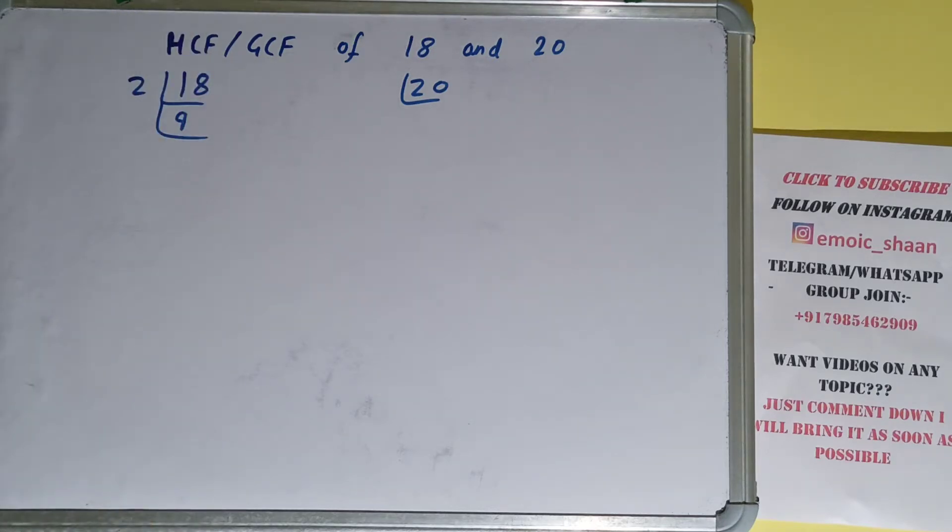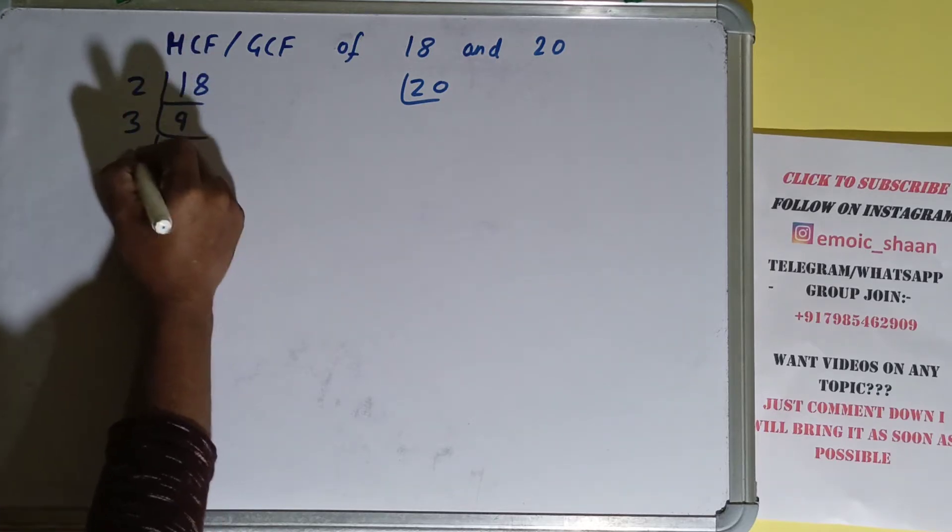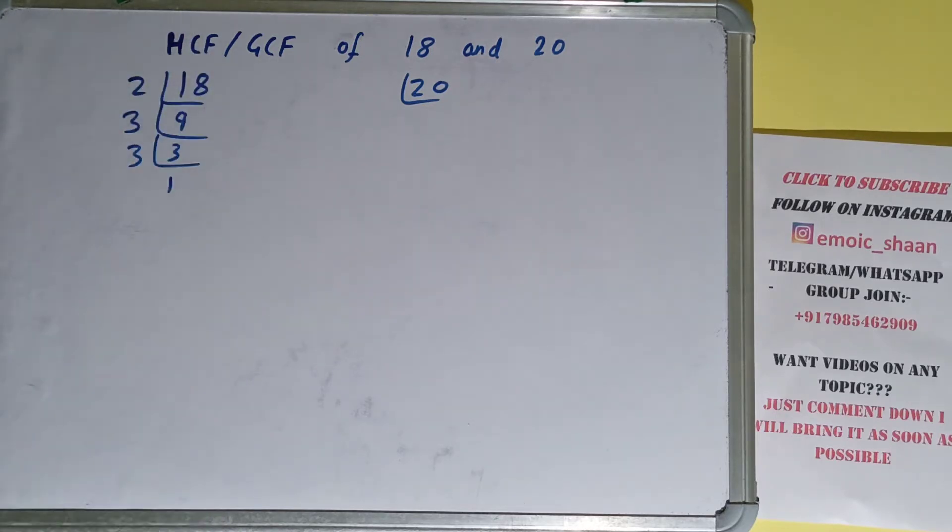We'll have 3. 3 is again divisible by 3, we'll have 1. Okay, so we are done with 18.